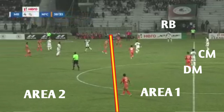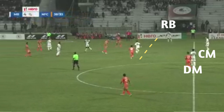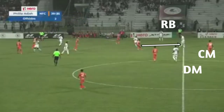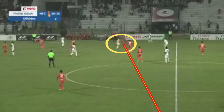This is area one, and this is area two. Naurim moves to the right-back position. He continuously moves to the right-back, covering that zone.